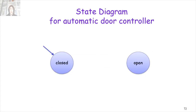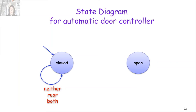We have two states. Let's say we start from the closed door state; the second state is open door. If nobody is standing on the pad, or only someone is in the rear pad, or two people are standing — one in front and one in rear — the door should remain closed. But when we have a closed door and only one person in the front pad, we should open the door, transitioning from closed to open.